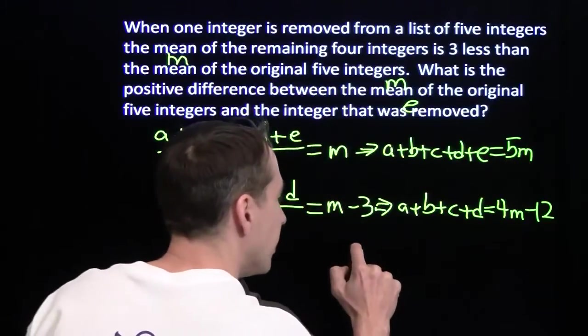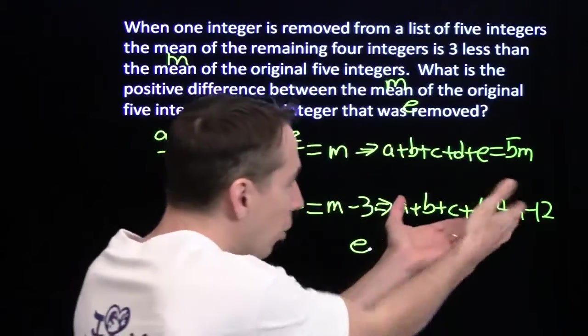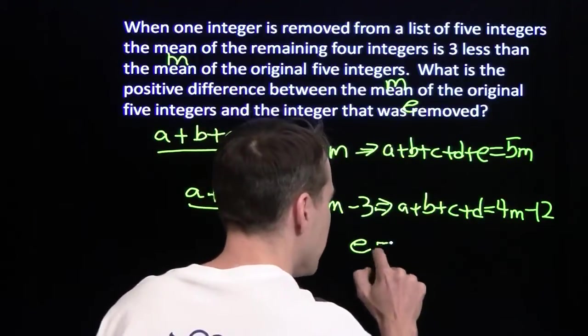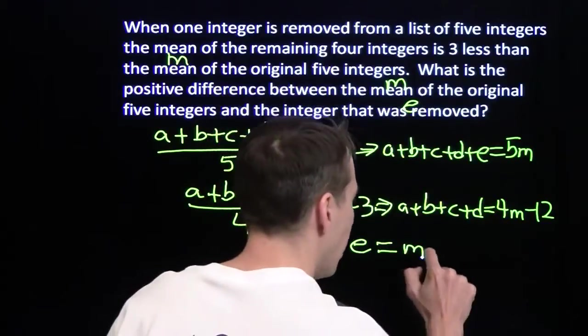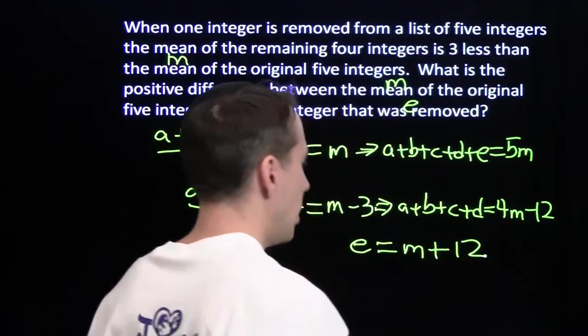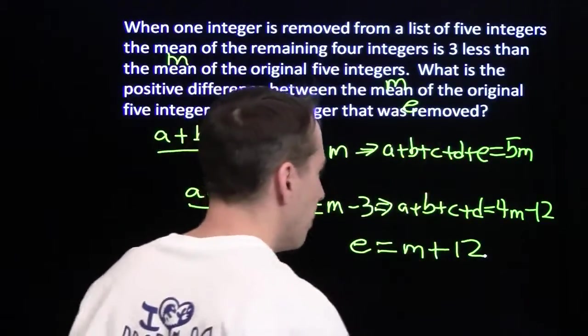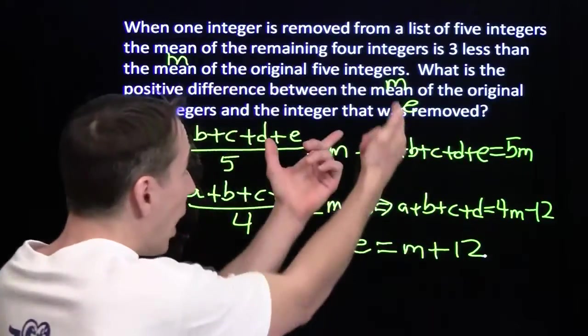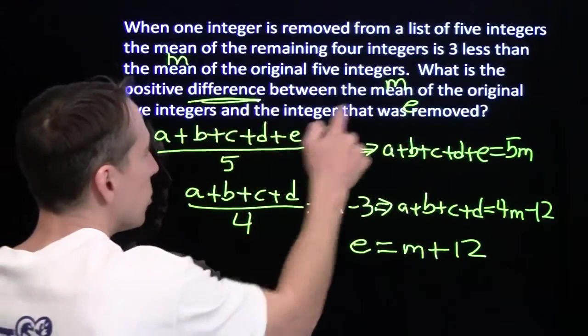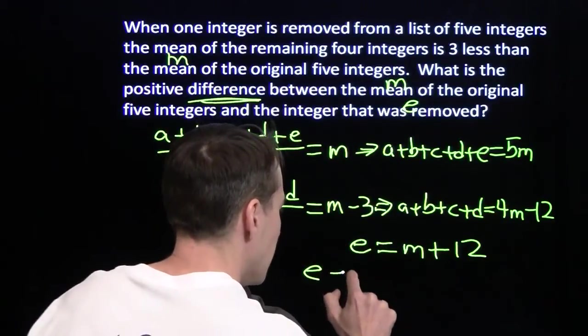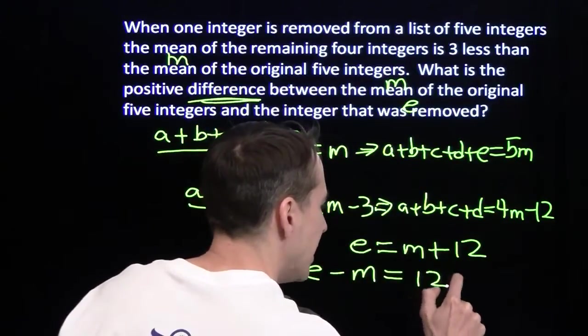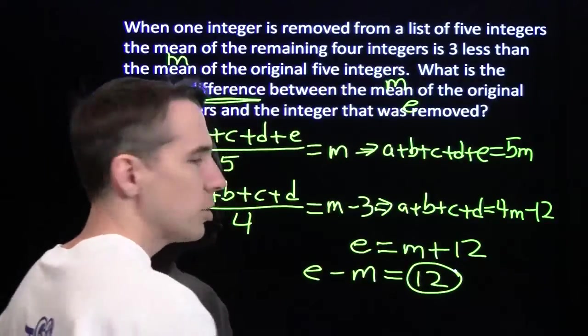All I have left is E. E over here on the right, 5M minus 4M. That leaves just M. Then 0 up here, minus a negative 12. That leaves 12, a positive 12. Minus a negative, you get a positive. Now I want the difference between M and E. Bring that M over here, and I subtract M from both sides, I get E minus M is 12.